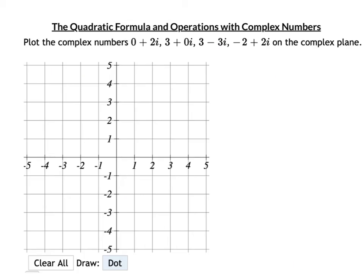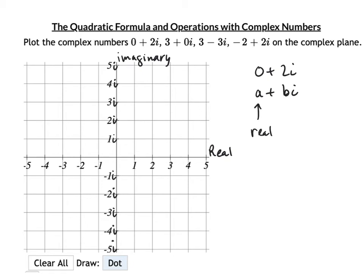Complex numbers can be graphed in the coordinate plane. The x-axis is the real axis and the y-axis is the imaginary axis (1i, 2i, 3i…). For 0 + 2i: go 0 on the real axis and up 2i — the point lands on the imaginary axis.